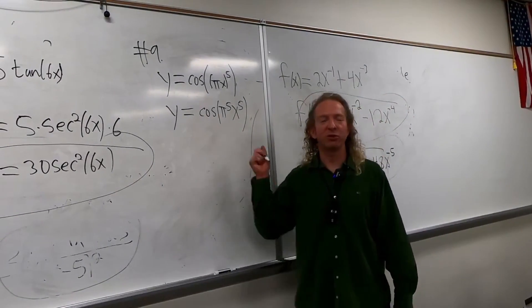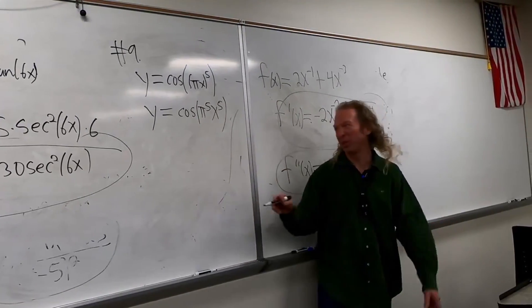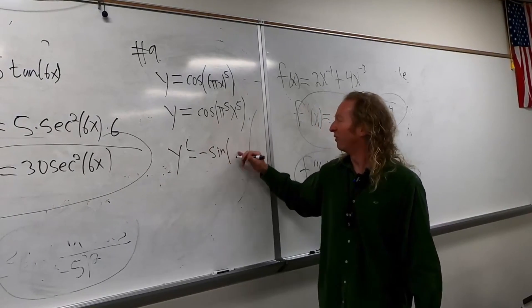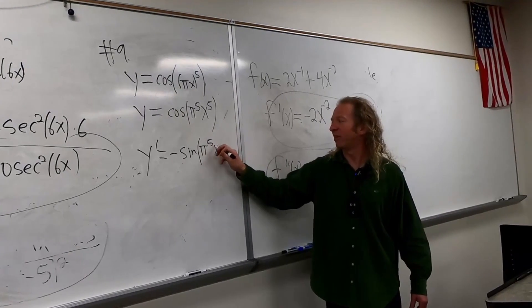What's the derivative of cosine? Negative sine. It's got that negative, it's really annoying. So it's negative sine. Oh, this is weird. Pi to the fifth x to the fifth.